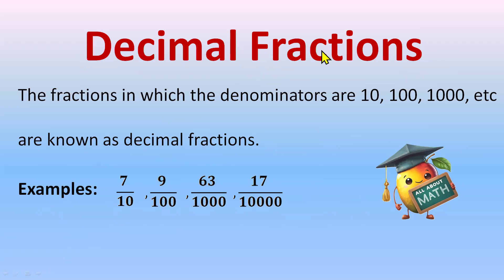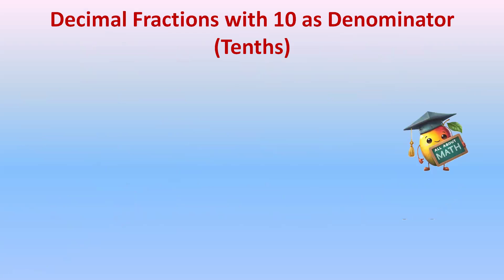So these are the decimal fractions when we have denominators 10, 100, 1000, etc. Now let's understand further. A decimal fraction with 10 as denominator is called tenths. When we have 10 as a denominator in a fraction, we name it as tenths.